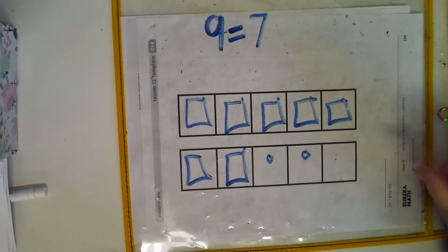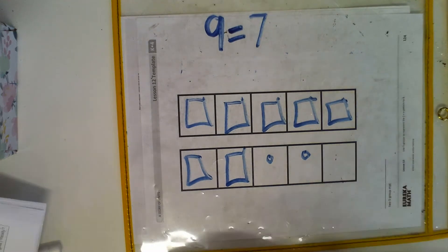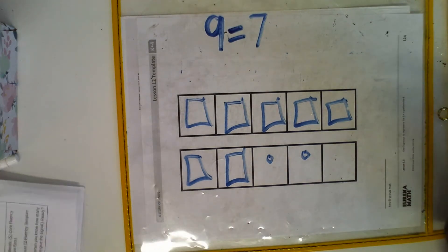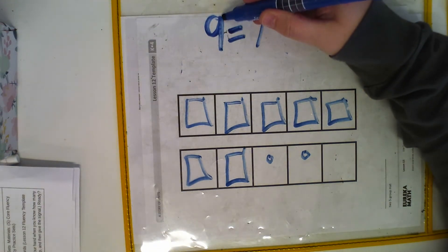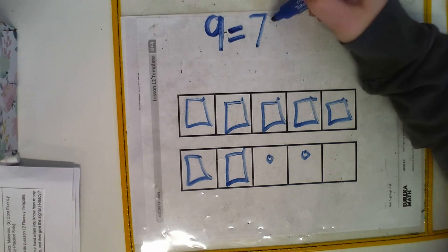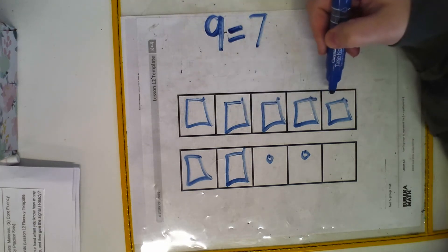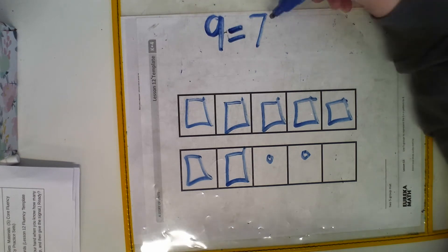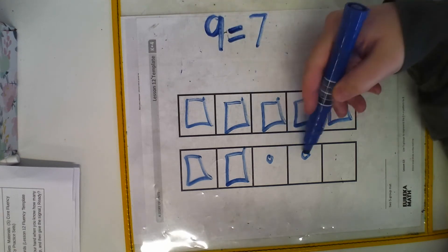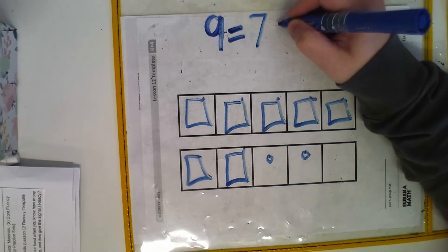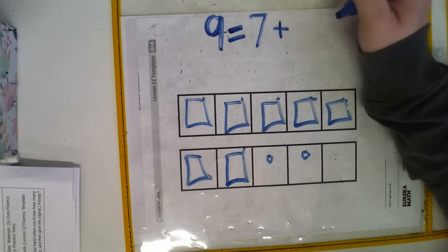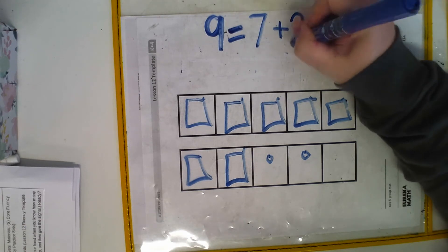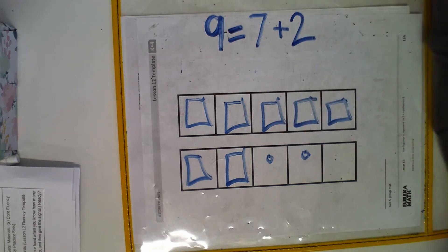Let's go ahead and make our number sentence. We know that all together he has nine blocks. Seven are large. We drew our picture to go along. So we know the other part of seven is two to make nine. We're going to put a plus sign and put our other part, which is two. So we had seven large blocks and two small blocks.